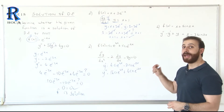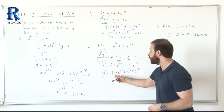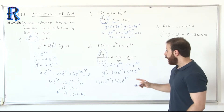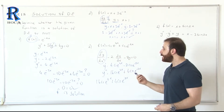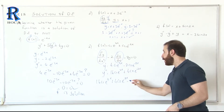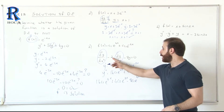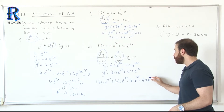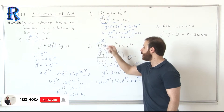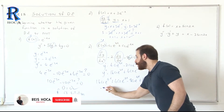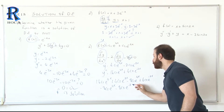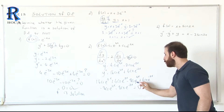Let's put this information in the equation. The second derivative gives 16C1·e^(4x) plus 4C2·e^(-2x). We multiply the first derivative by minus 2: minus 2 times 4 gives minus 8C1·e^(4x), and minus 2 times minus 2 gives plus 4C2·e^(-2x). We multiply y by minus 8: minus 8C1·e^(4x) minus 8C2·e^(-2x). We check if it equals 0.